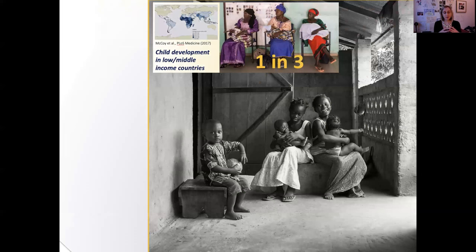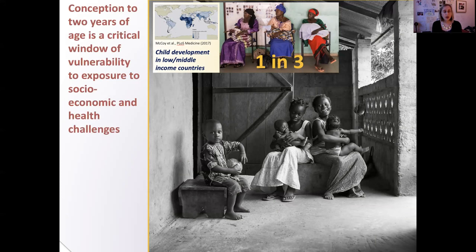Research gathering information about child development across the world shows that in lower middle income countries, only one in three children reach basic developmental milestones. That impact is particularly strong in sub-Saharan Africa. I'm interested in this because conception to two years of age is a critical window of vulnerability to exposure to socioeconomic and health challenges, and this is the area of psychology and neuroscience that my work is focused on.